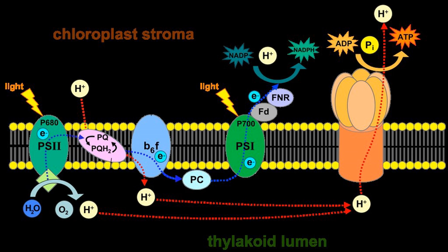PS2 and PSI are connected by a transmembrane proton pump, cytochrome B6F complex (plastoquinol–plastocyanin reductase, EC 1.10.99.1). Electrons from PS2 are carried by plastoquinol to cytochrome B6F, where they are removed in a stepwise fashion and transferred to a water-soluble electron carrier called plastocyanin. This redox process is coupled to the pumping of four protons across the membrane. The resulting proton gradient together with the proton gradient produced by the water-splitting complex in PS2 is used to make ATP via ATP synthase.